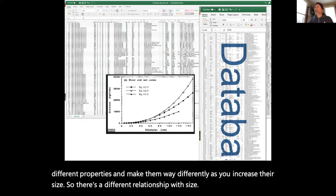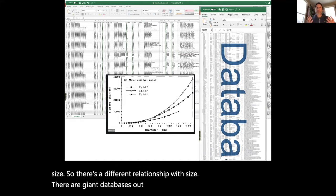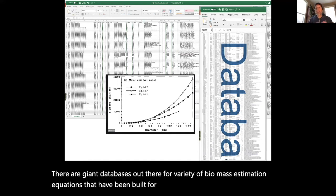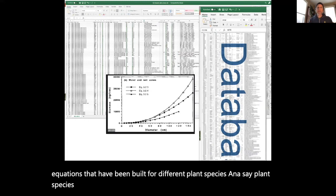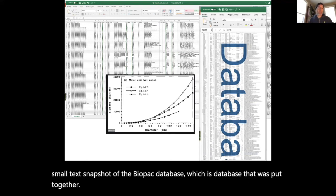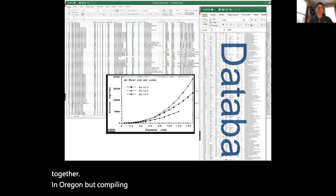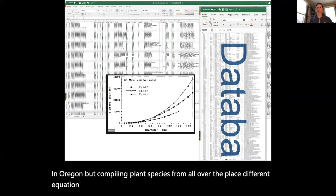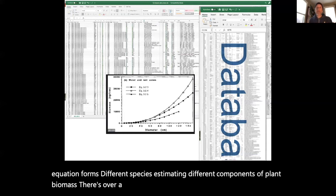There are giant databases out there for a variety of biomass estimation equations that have been built for different plant species, and I say plant species because not just trees. In the background here, I'm showing you a small text snapshot of the Biopack database, which is a database that was put together in Oregon but compiling plant species from all over the place, different equation forms, different species, estimating different components of plant biomass.